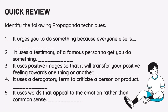Before moving on to our lesson, let us first have a quick review. Identify the following propaganda techniques used in the sentence. Number 1: It urges you to do something because everyone else is. Number 2: It uses a testimony of a famous person to get you to do something. Number 3: It uses positive images so that it will transfer your positive feeling towards one thing or another. Number 4: It uses a derogatory term to criticize a person or product. And number 5: It uses words that appeal to the emotion rather than common sense.